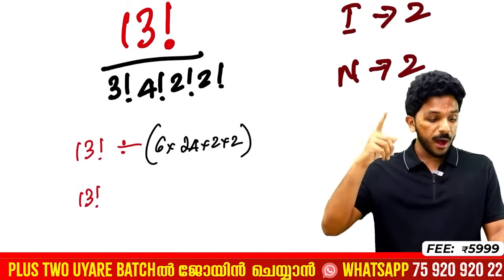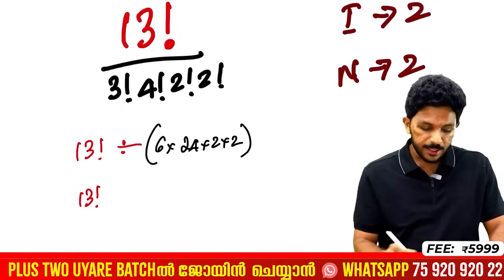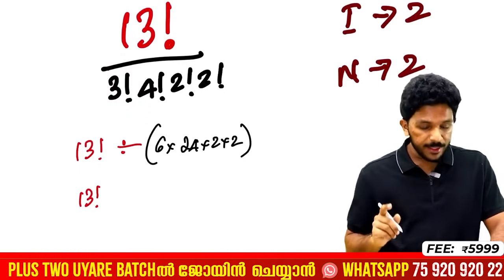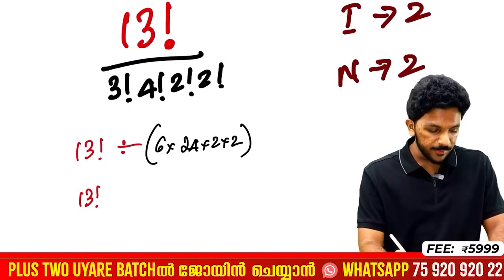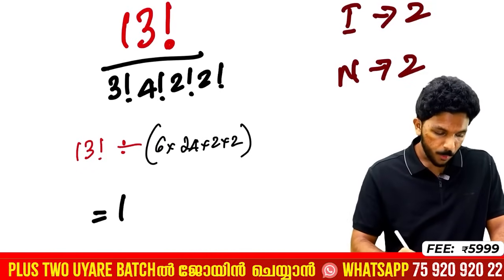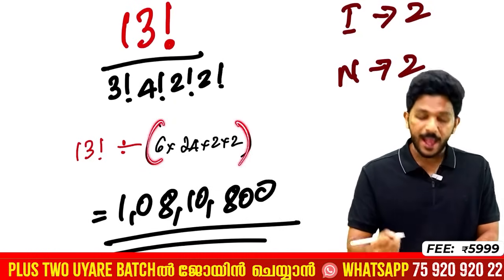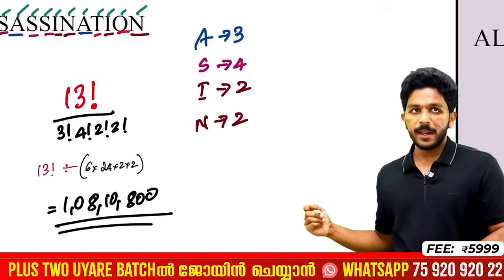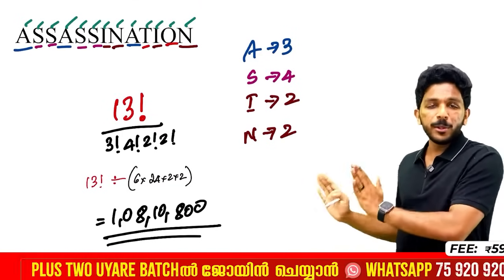Type 13 factorial into the calculator, then divide by 6, then divide by 24, then divide by 2. The answer is 1 crore, 8,10,800. Assassination has repeated letters, and with two unique N arrangements, the final answer is 1,810,800.